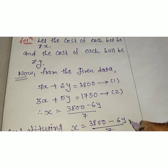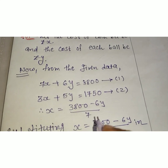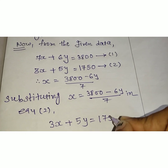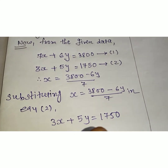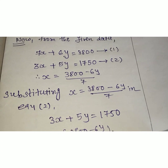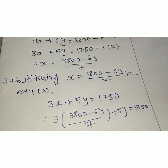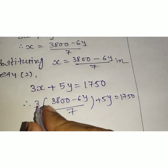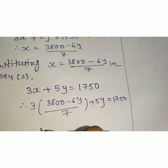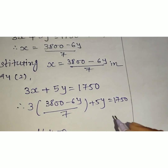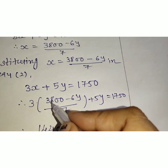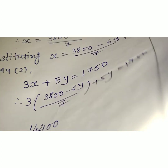Equation 2 is 3x + 5y = 1750. Therefore, substituting x, we get 3 × (3800 − 6y)/7 + 5y = 1750. Taking LCM as 7, we get 3 × 3800 = 11400, and continuing the calculation.